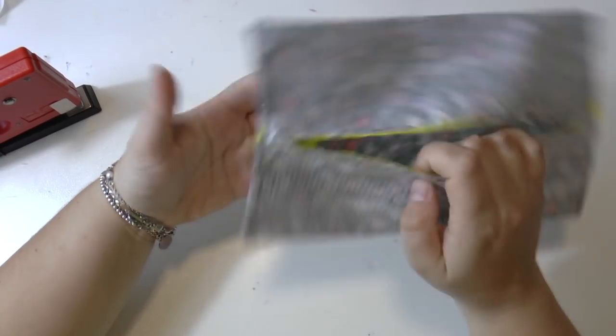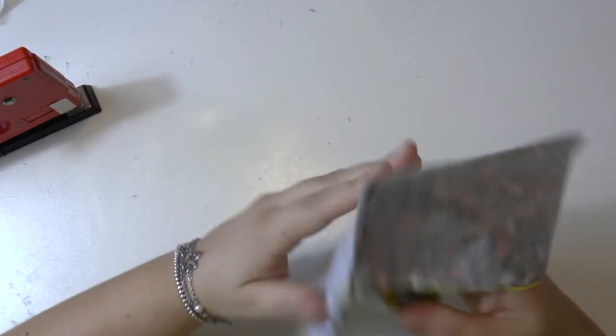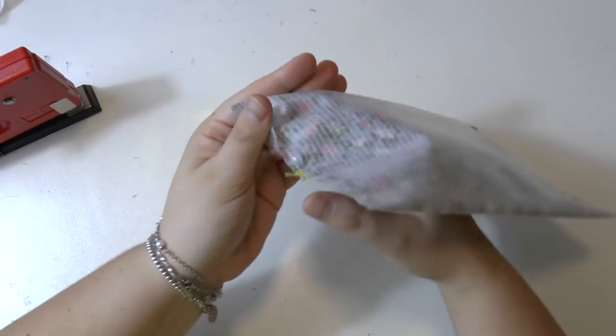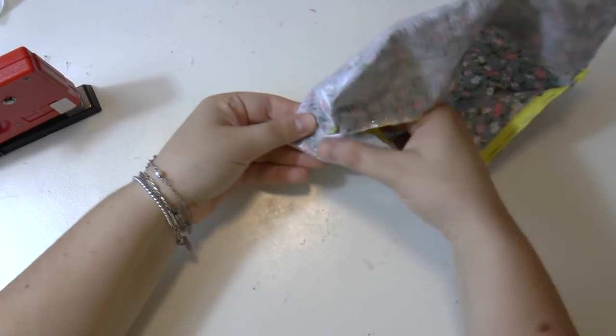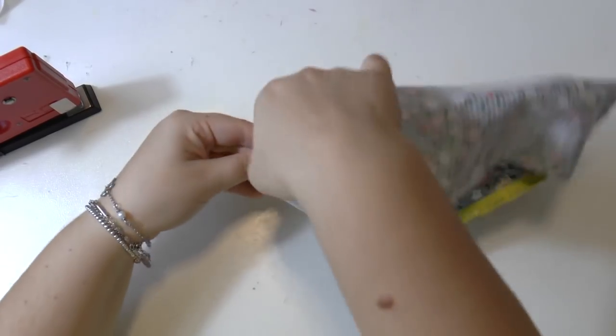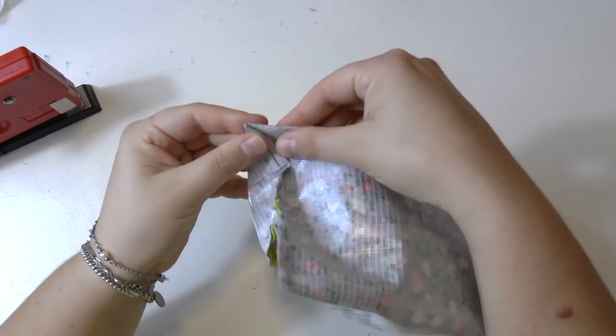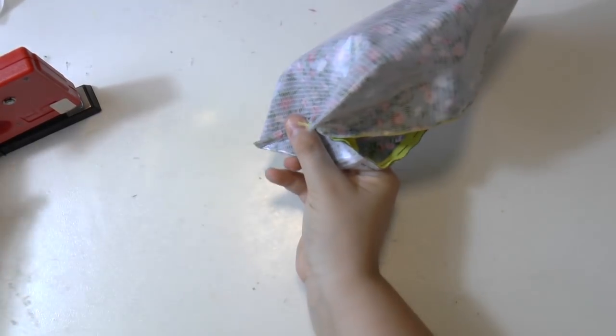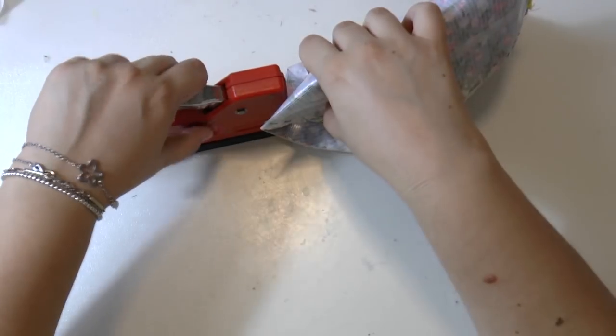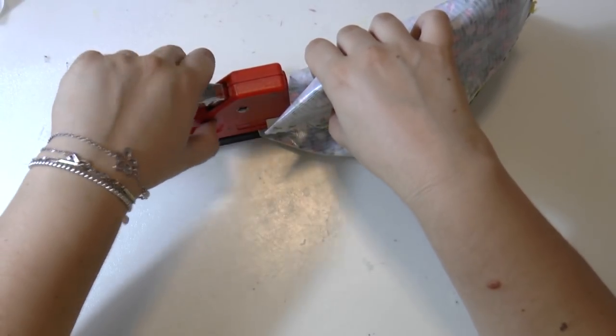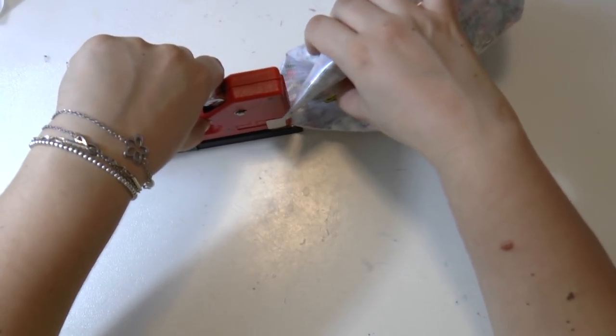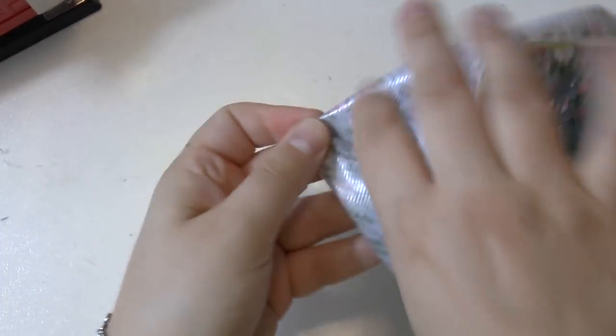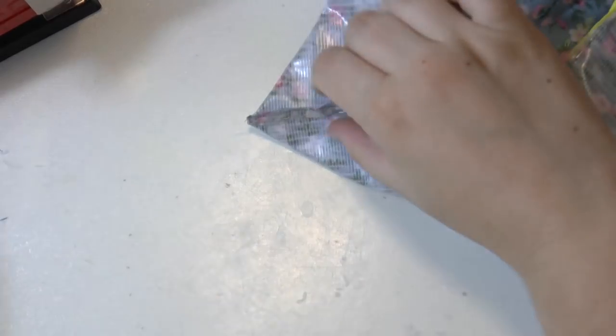So at this point you have something like this. And you can stop right here if you want a flat pencil case which opens in the middle. But I decided I wanted a different design. So I took the corners and squished them into triangles and then stapled them. Make sure you staple them all the right size and the four of them.